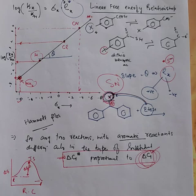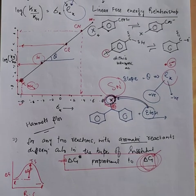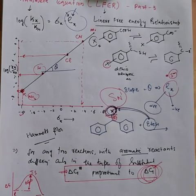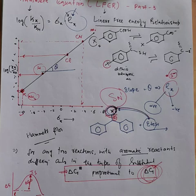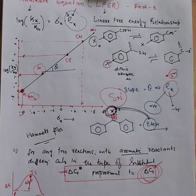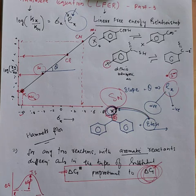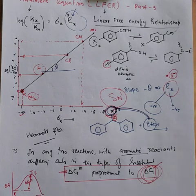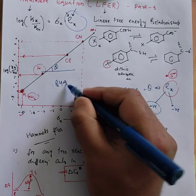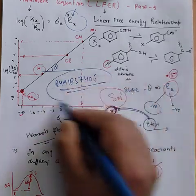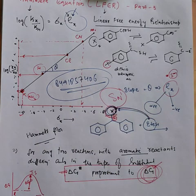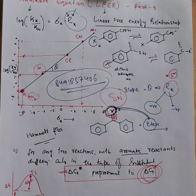This was all the basic data about the Hammett equation as a linear free energy relationship. This is Part 3 — Part 1 was the first week, Part 2 last week, and this is the third. I hope it benefits the students. If you have questions, you can send a WhatsApp message to 8491857406 or write in the comments. Thank you, this is what we have for the Hammett equation.